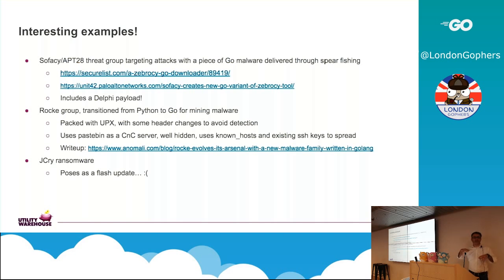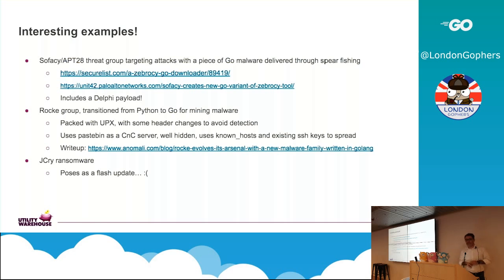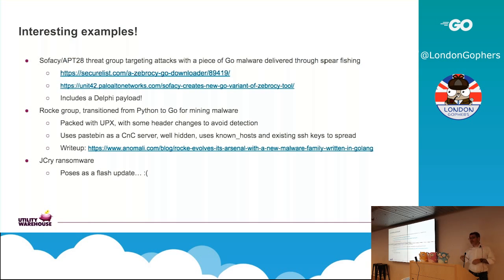They were using Pastebin — you find a lot of people don't necessarily beacon out to command and control servers. They get sneaky, and that's changed in the last few years. Pastebin is commonly used, Twitter's been used, and Britney Spears' blog has been used — they actually pasted a comment, and the malware would go and look at a Britney Spears blog comment and figure out what to do next. That wasn't written in Go though. Rock Group transitioned from a lot of Python into Go, and then there's the jCry ransomware, which regrettably poses as a Flash update — and people still click on it.